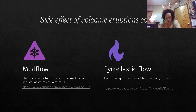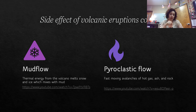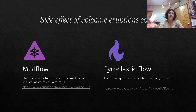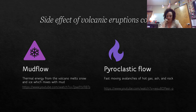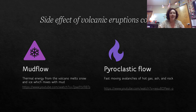Pyroclastic flow — 'pyro' meaning fire, 'clastic' meaning bits of rock — is a fast-moving avalanche of hot gas, ash, and rock literally coming down the mountain at you. There is almost a guaranteed 100% fatality rate if you encounter this. There's a video linked showing how to survive or what to do if a volcano erupts.